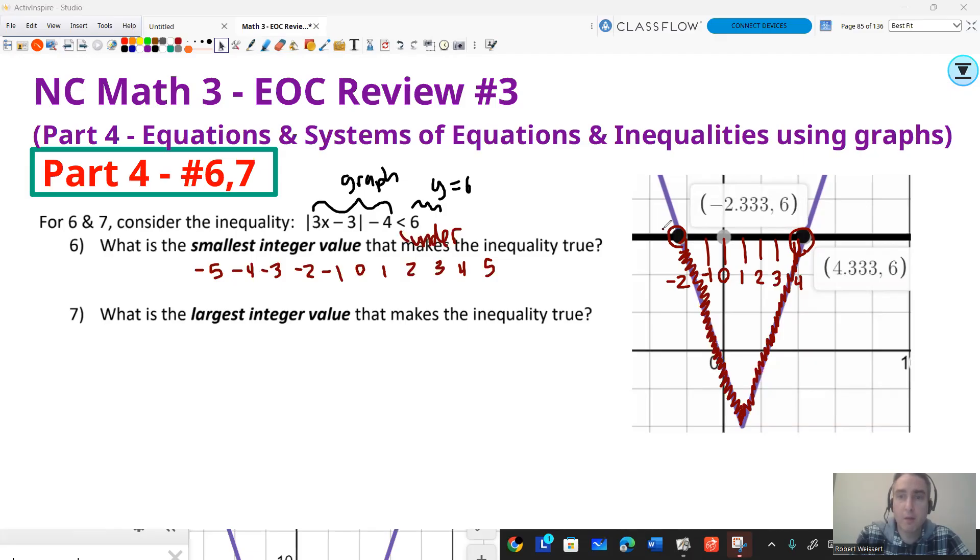Because if I go to -3, well, that's too far out. And if I go to positive 5, that's too far out. So I don't want to include those numbers, but anything between -2 and 4, including -2 and 4, are part of the solution set. So these are all your integer solutions to this inequality. And the question says, what's the smallest integer? The smallest integer is going to be -2. So the answer to 6 is -2. The largest integer is going to be 4. So for number 7, that's going to be 4.